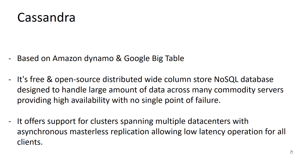For example, if you have an address, that address can be one column family which has different columns like street number, house number, pin code. These are Wide Column databases. You can also see our other tutorial where we explained what column-oriented databases are.